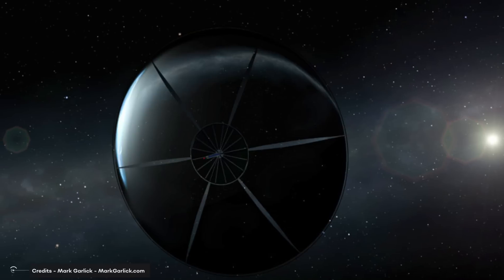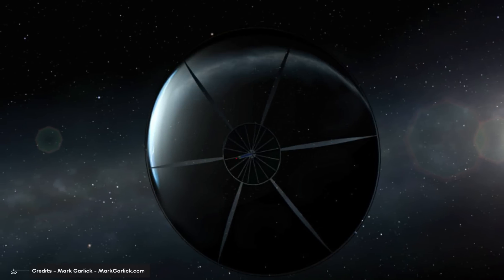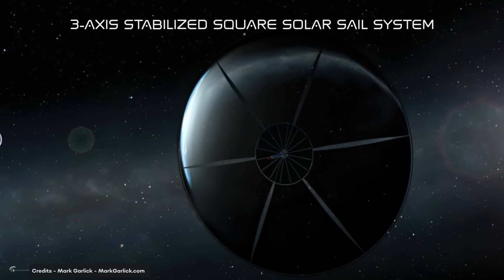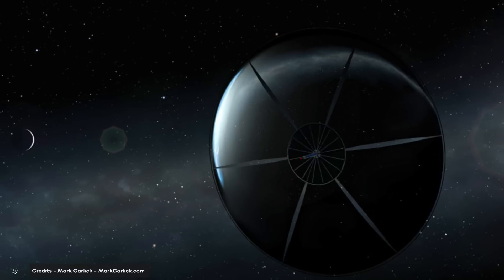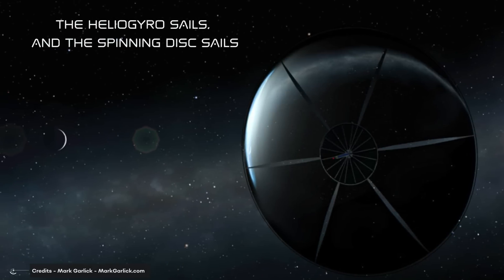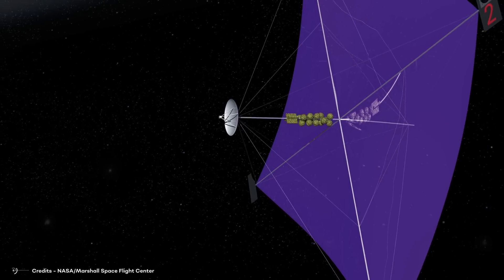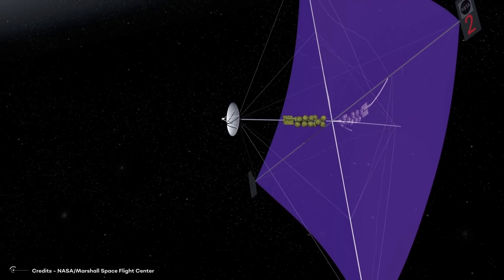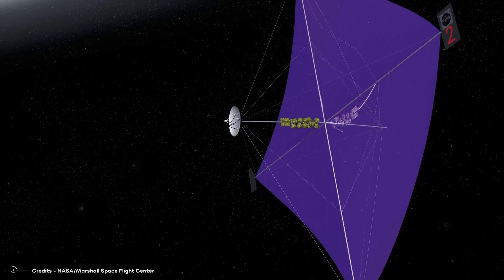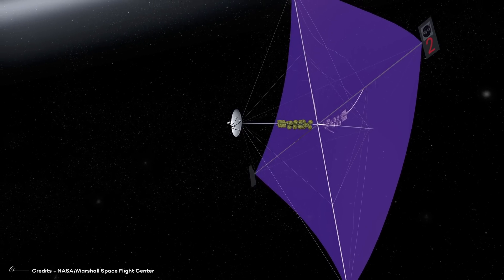The design of the sail is also crucial to its success, as it must be lightweight and strong enough to withstand the harshness of space. There are three basic types of near-term solar sail designs: the three-axis stabilized square solar sail system, the heliogyro sails, and the spinning disk sails. The first one looks quite much like a kite and uses a rigid structure to extend and suspend the sail material in space to catch the sunlight.